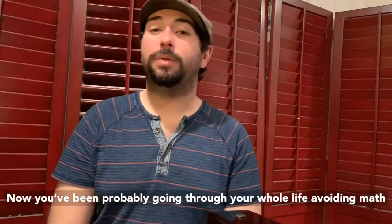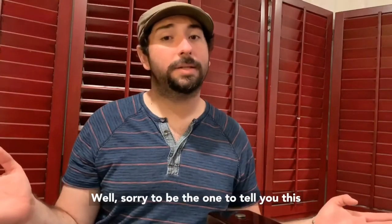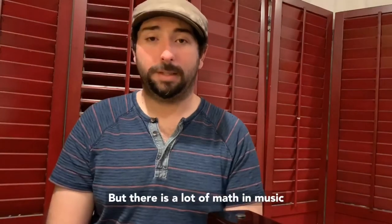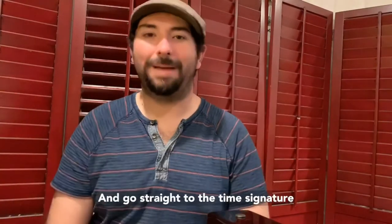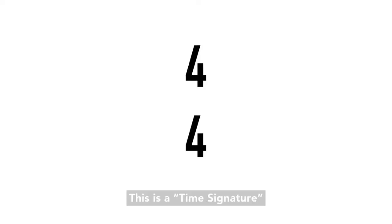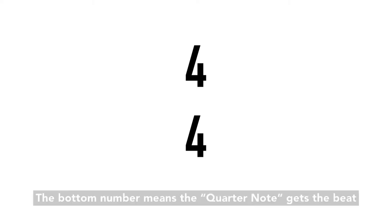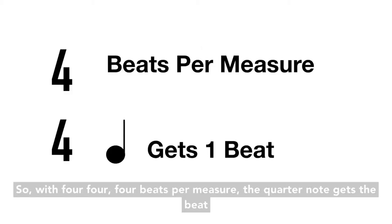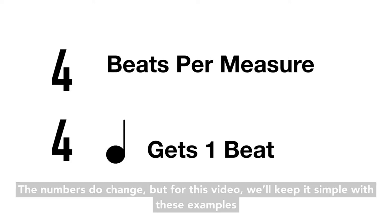Now you've probably been going through your whole life avoiding math. Well, sorry to be the one to tell you this, but there's a lot of math in music. So let's rip this band-aid off quick and go straight to the time signature. This is a time signature. The top number represents the beats per measure. The bottom number means the quarter note gets the beat. So with four-four: four beats per measure, the quarter note gets the beat. The numbers do change, but for this video we'll keep it simple with these examples.